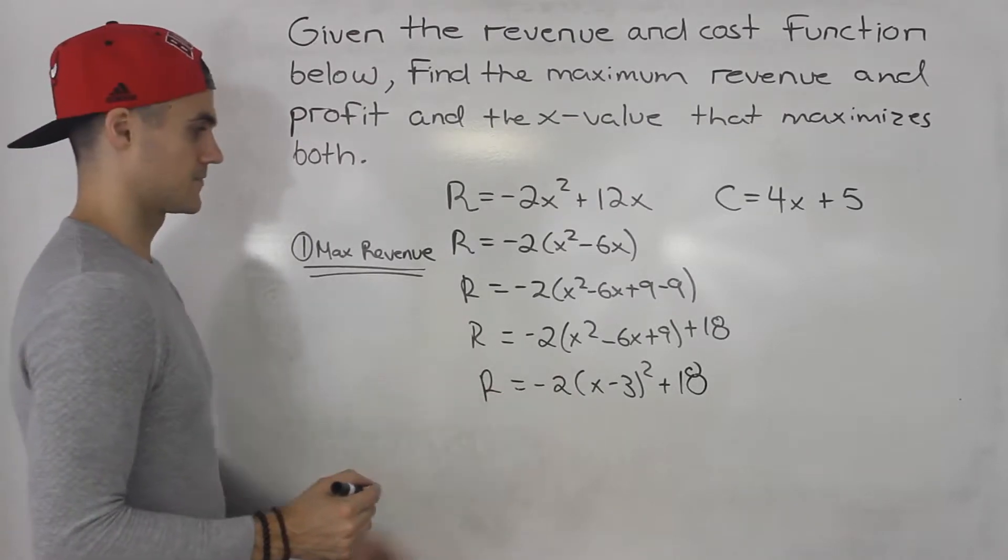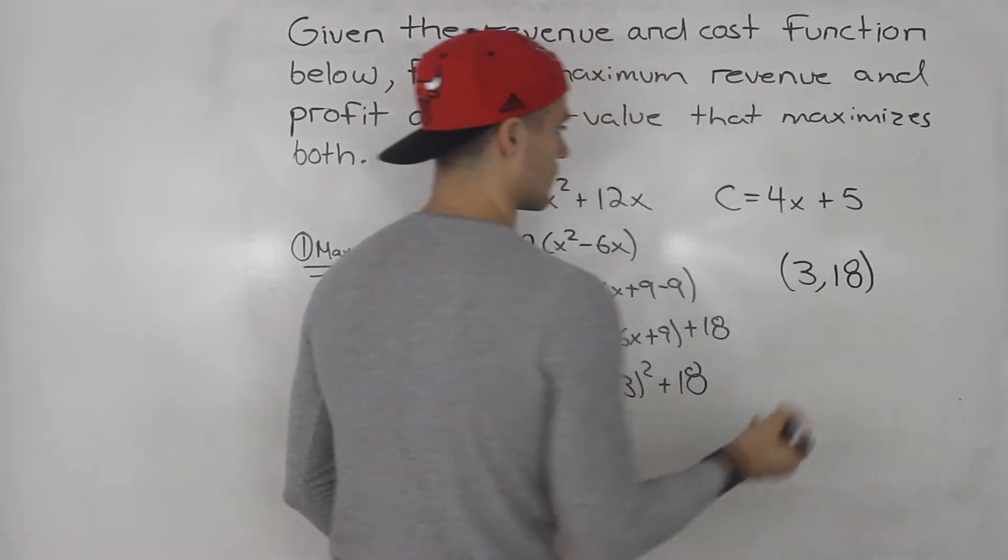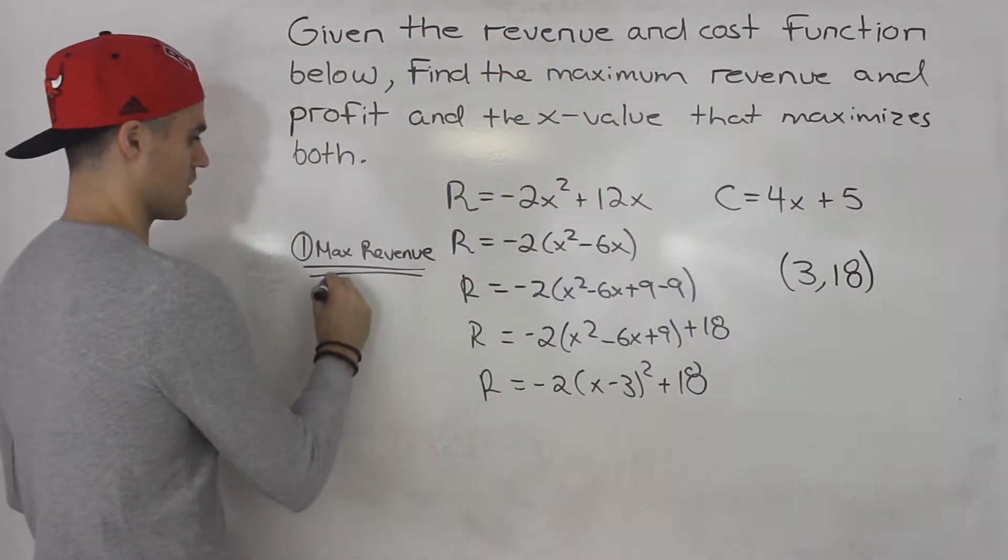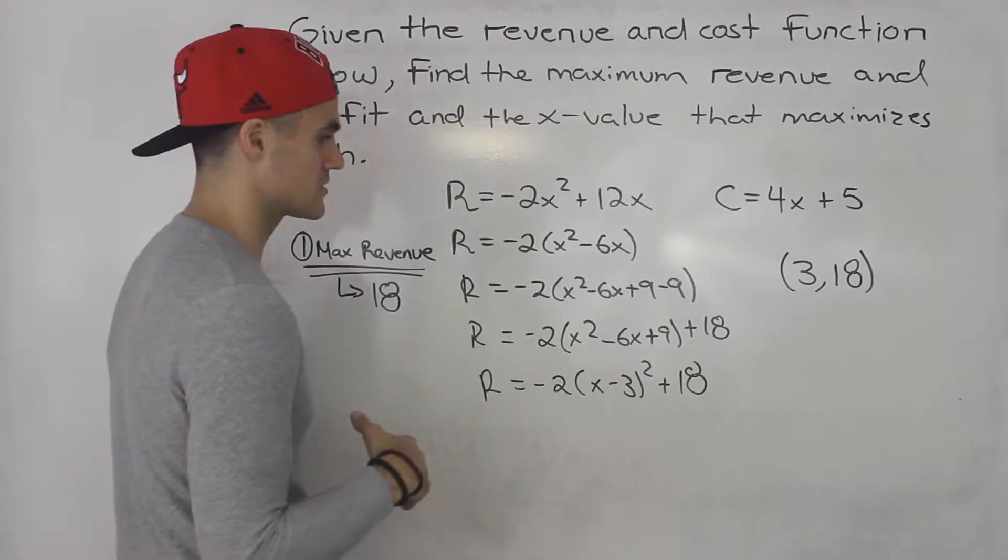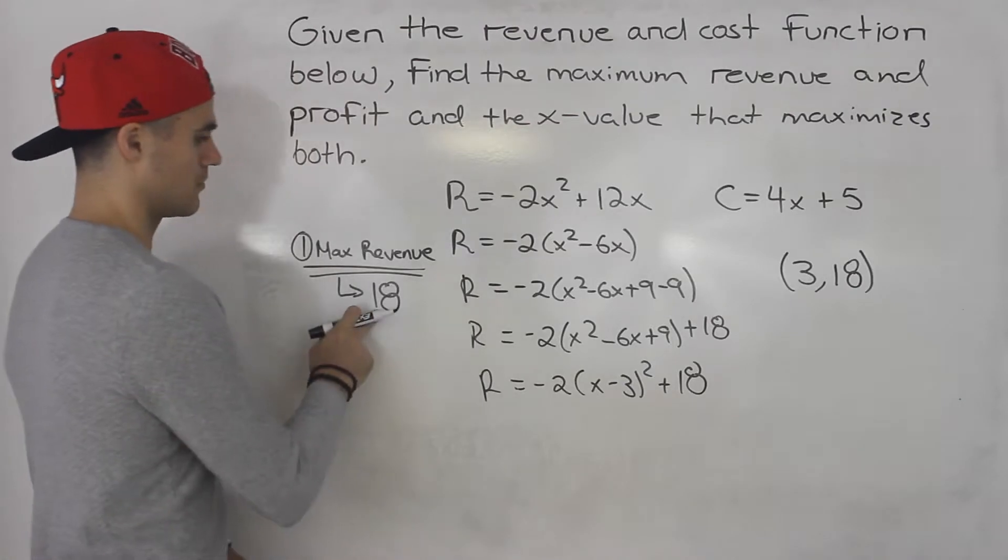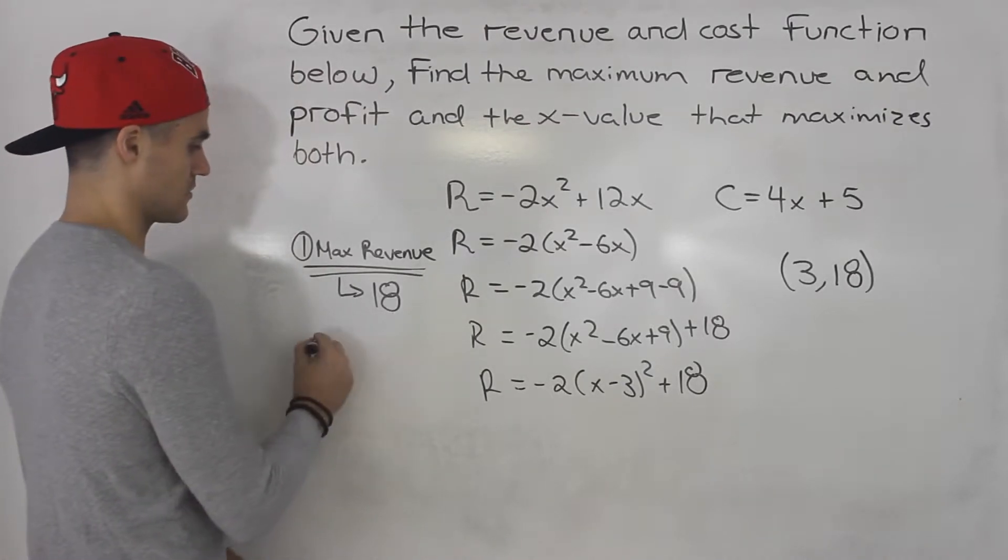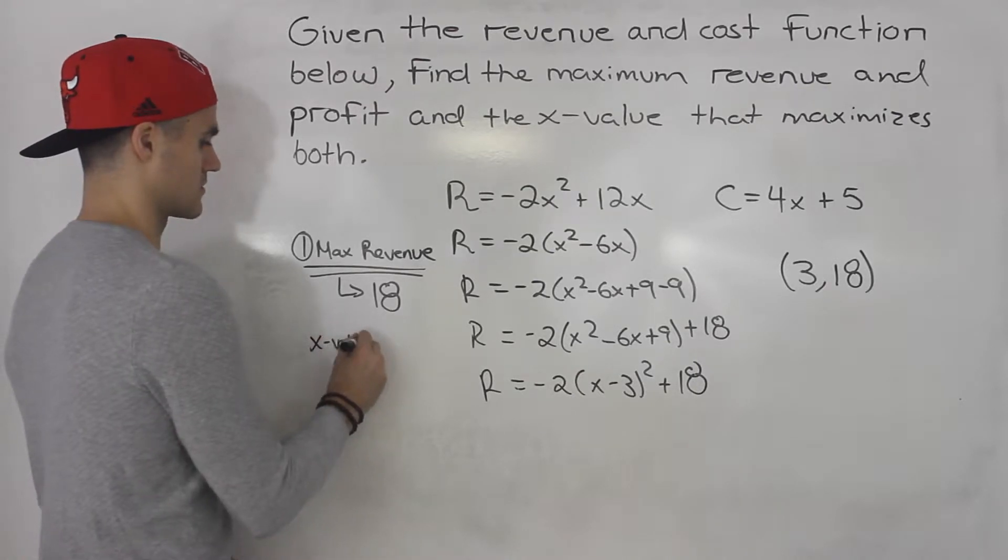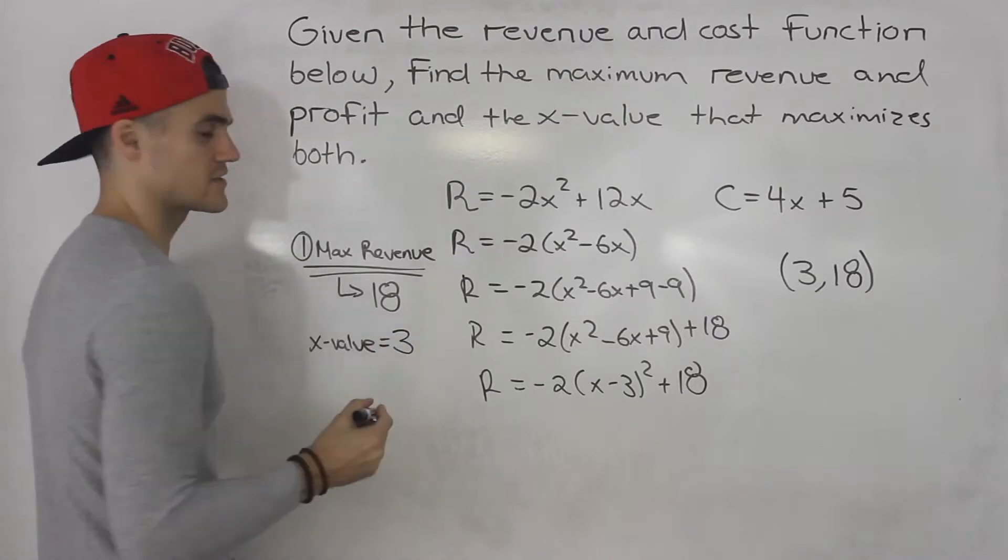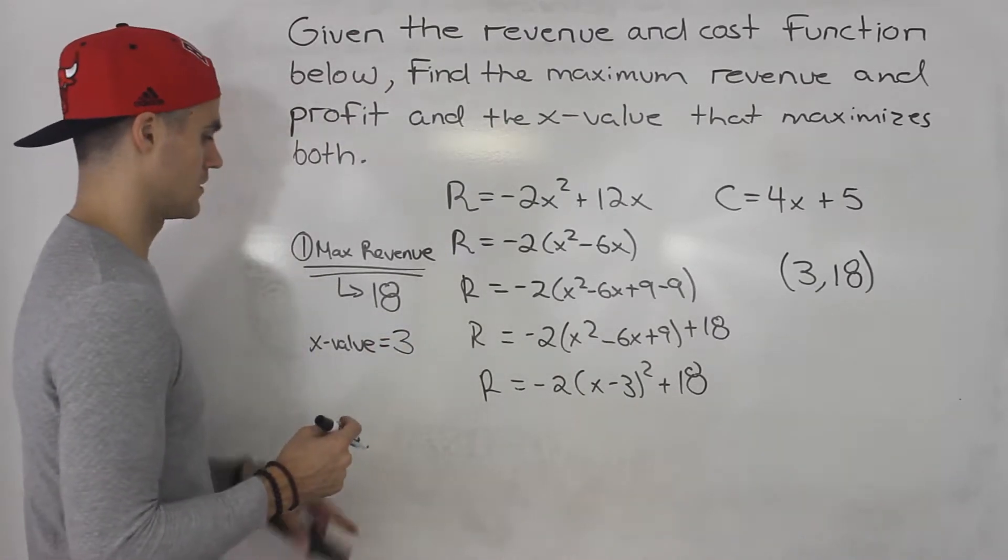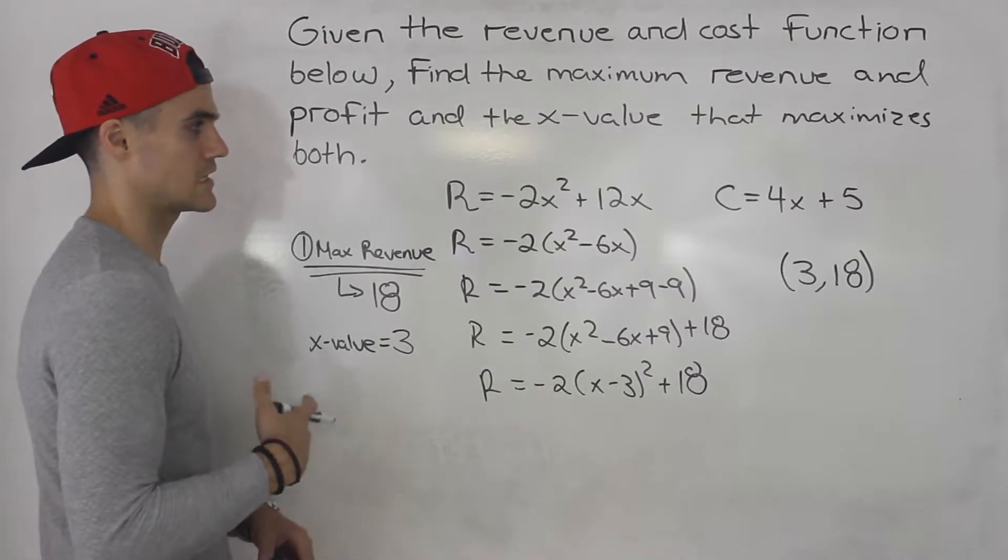So what's the vertex here? Vertex is 3 and 18 for the revenue. So that means the maximum revenue is 18. Now whether that's in millions or thousands, we're not sure in this question, but maximum revenue is 18. And the x value that maximizes revenue is 3. Whether that's units sold or something else, we don't know.